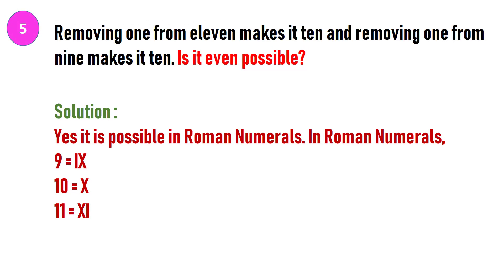Yes, it is possible in Roman numerals. In Roman numerals, 9 is represented as IX and 10 is represented with the letter X and 11 represented with the letter XI. Thus, by removing 1 from 9, you are getting 10 because here 1 is I. If you remove I, you will get the value 10. Similarly, if you remove 1 in 11, you are getting 10 again. Thus, you can achieve the following statement.